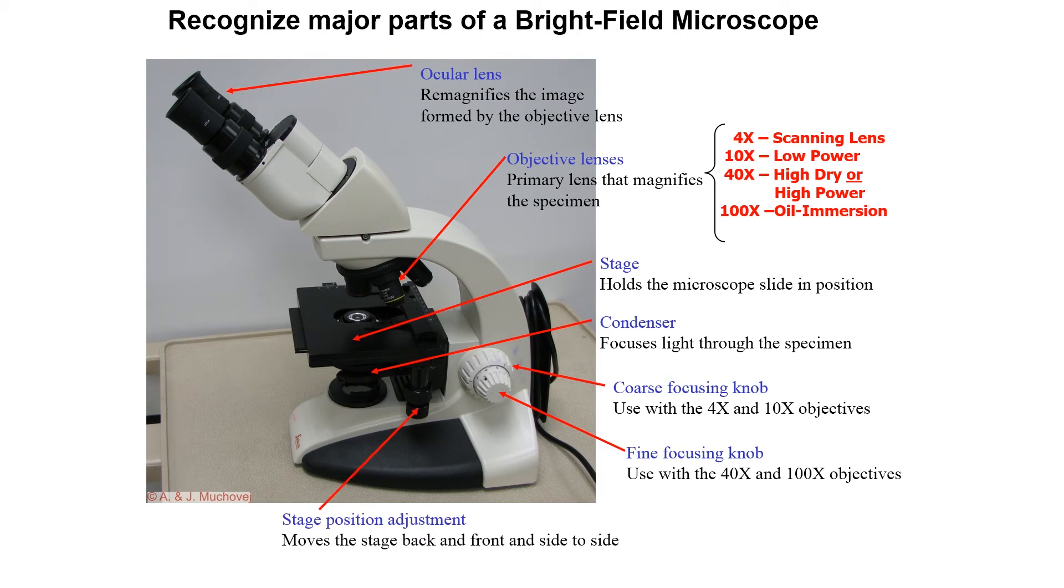We have the stage position adjustment and these are two knobs, one moves the stage back and forth and one moves it from side to side. So when we look at the major parts of the brightfield microscope they all become very important.